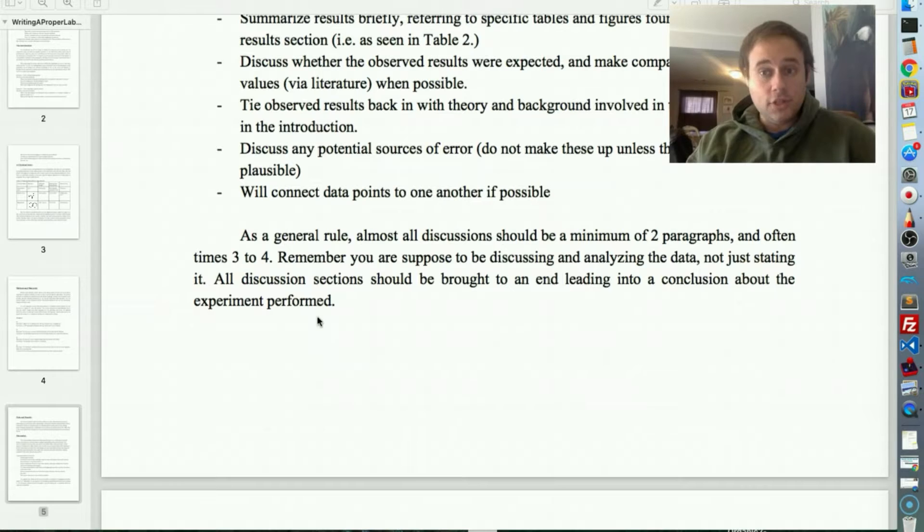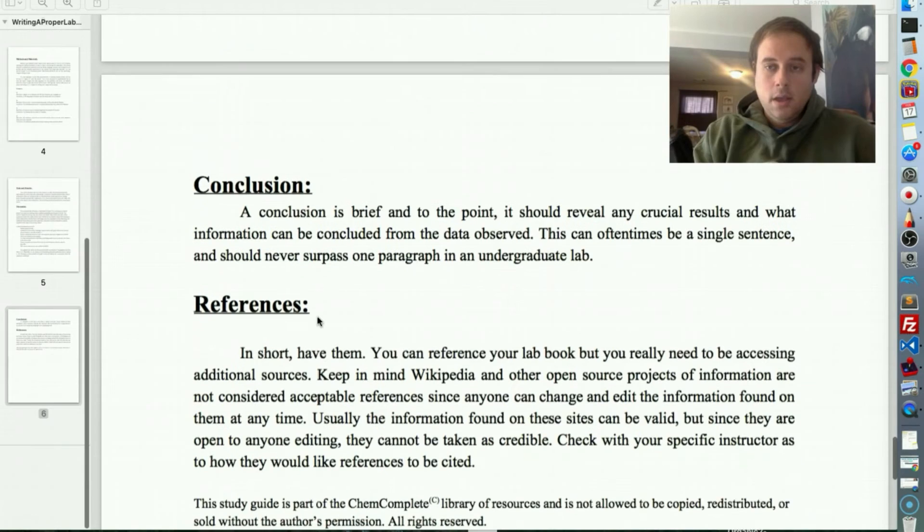Probably one page would be minimum for a discussion, double-spaced. I would say two, potentially two and a half. It is possible you could overkill the discussion. You can write too much, but it should be somewhere in between there. So, remember, you are supposed to be discussing and analyzing data, not just stating it. All discussion sections should be brought to an end leading into a conclusion for the experiment that was performed.